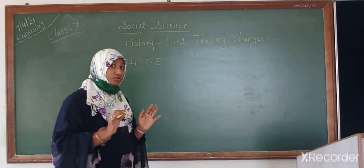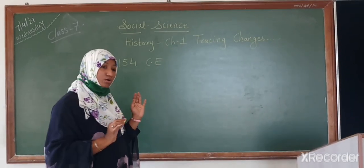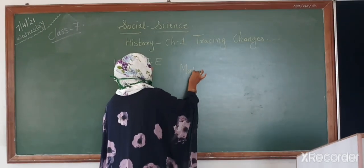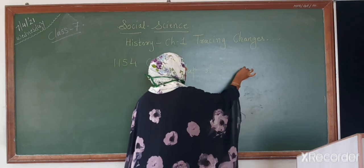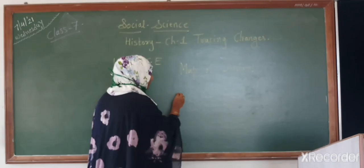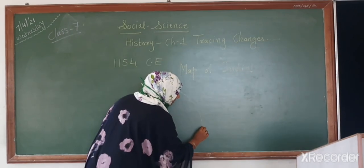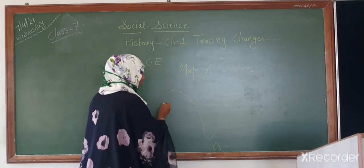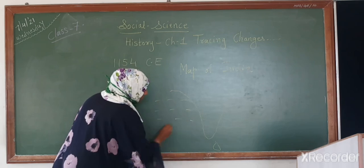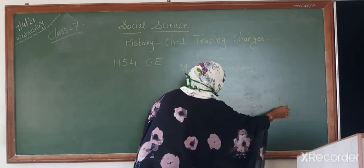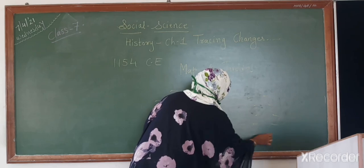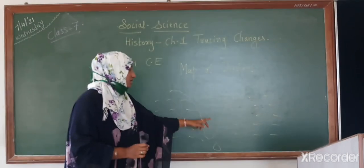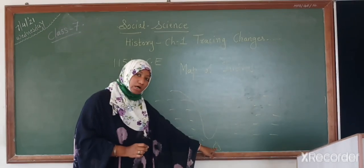I don't have a perfect drawing but I will try my best. In the map of India, we have the south part in the south direction. This is our water body, which is in the south direction. According to today's map, Sri Lanka is in the south position.